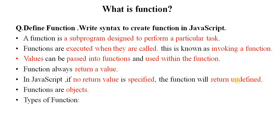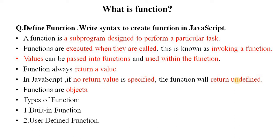There are mainly two types of functions. First is a built-in function and second is a user-defined function. Built-in functions are functions that are already defined in JavaScript — for example, the write function, alert function, and prompt function. These are system-provided functions. User-defined functions are functions written or defined by the user at the time of writing a program, and they are simple functions defined by the user.